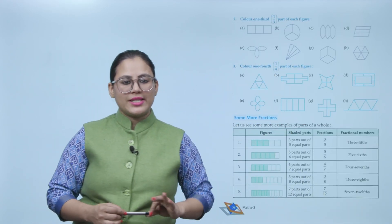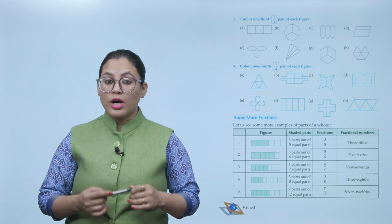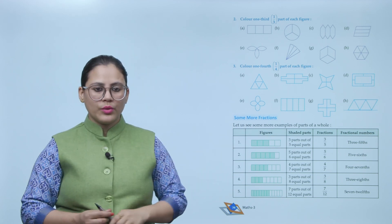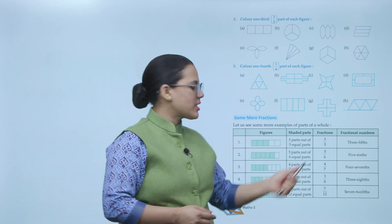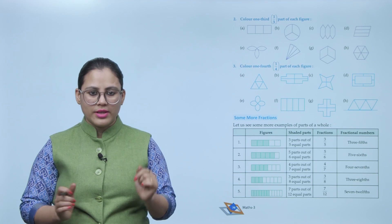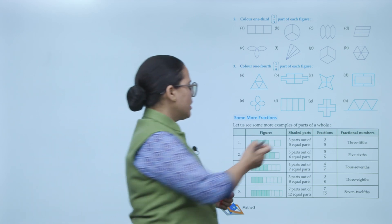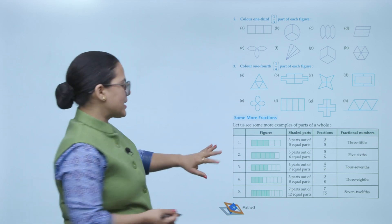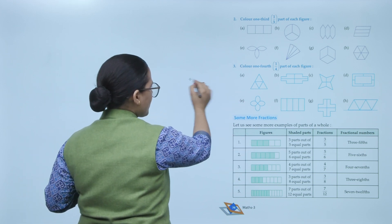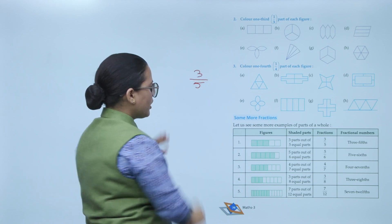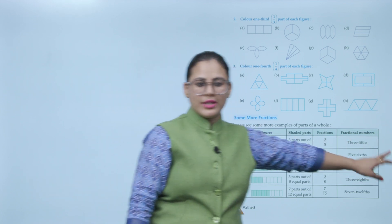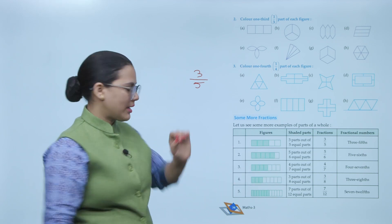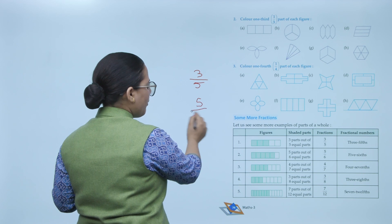Let us see some more examples of parts of a whole. In one figure, 3 parts are shaded while 2 parts are unshaded, so the shaded parts are 3 out of 5 equal parts — written as 3 fifths. In the next figure, 5 parts out of 6 equal parts are shaded — that is 5 sixths.